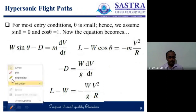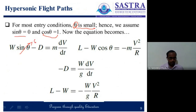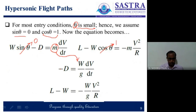We can further reduce this equation by considering the theta value is so small — sin theta is 0 and cos theta equals 1. So we can write this equation as minus D equals m times dV/dt, and this m we can write as W by g.